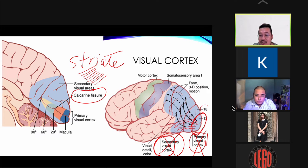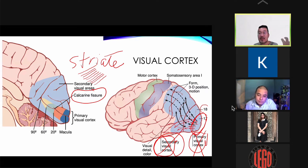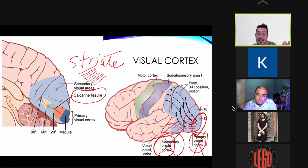If you have an intact primary visual cortex but a destroyed secondary visual cortex, you can see the object but do not know what it is. You can only identify it by touching it, because sense of touch is governed by the post-central gyrus (Brodmann areas 3, 1, 2), not the visual cortex. So you must close your eyes and palpate to identify the object using stereognosis.